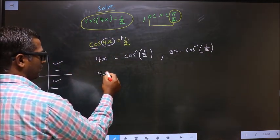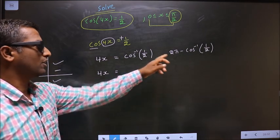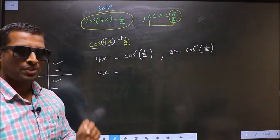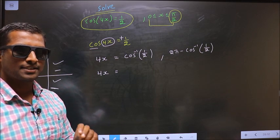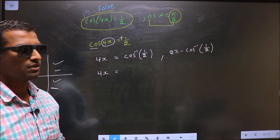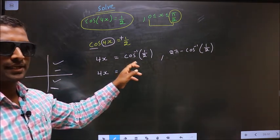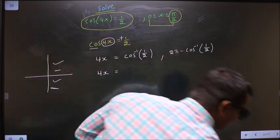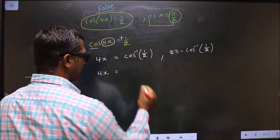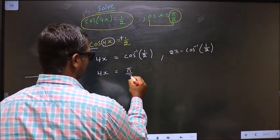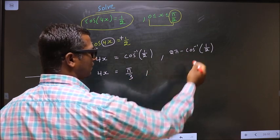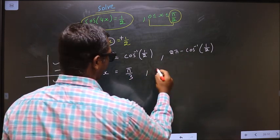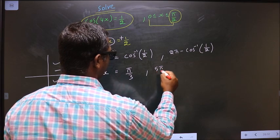Now 4x equals: before you calculate this, make sure your calculator is in radian mode. Put this in the calculator, you get π/3. Place this in the calculator, you should get 5π/3.